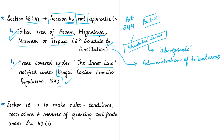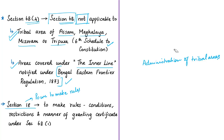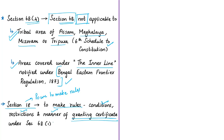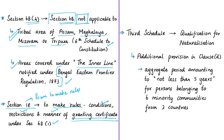There is also a proposed amendment to Section 18 of the Citizenship Act of 1955, which deals with the power to make rules. The new provision allows the central government to make rules specifying the conditions, restrictions, and manner for granting a certificate of registration or naturalization under Section 6B(1). The certificate granted under this section will be based on conditions and restrictions provided by the central government through these rules.